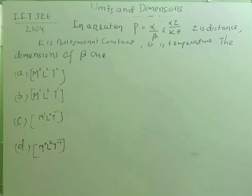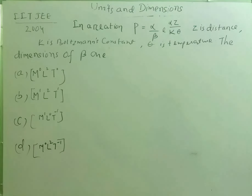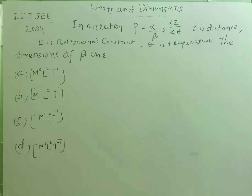Students, this question was asked in IIT JEE 2004 from the chapter on Dimensional Analysis. In the relation P equals alpha divided by beta, multiplied by e to the power alpha z by k theta, where z is a resistance, k is Boltzmann's constant, and theta is temperature — find the dimensions of beta.